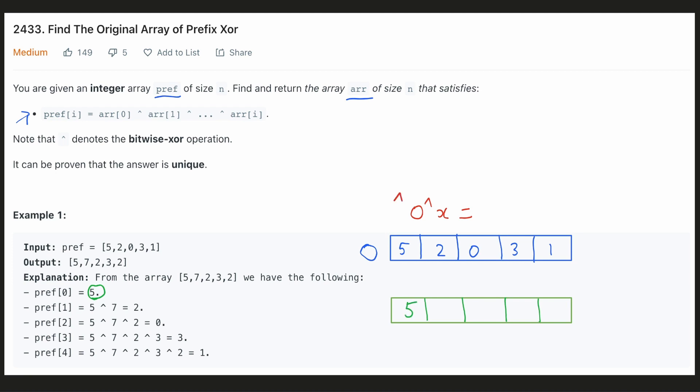For the next element we have to find a number such that 5 xor 0 xor that number is equal to 2. We can see from the example that number 7 satisfies this condition. From now onwards we could ignore xor 0 because it results in that same number itself.